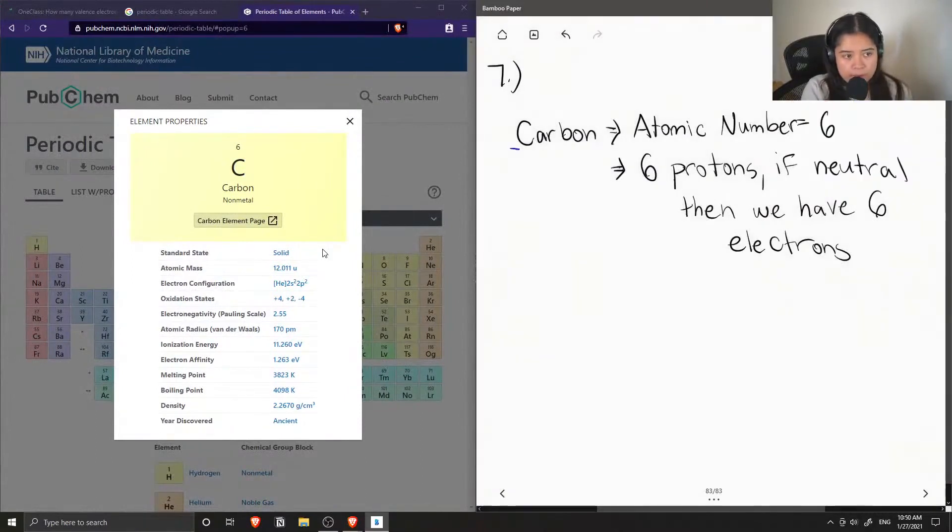So now if we try to draw this electron diagram of an atom of carbon, we can show how the inner shell contains two electrons out of the six, and then the outer shell will have the remaining four.